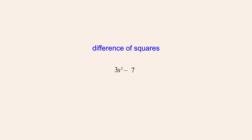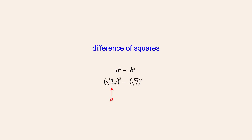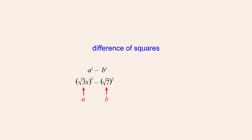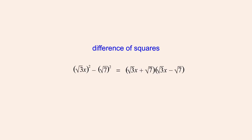Another example is the quadratic expression 3x-squared minus 7, which is the difference of the square of the square root of 3 times x and the square of the square root of 7. So the square root of 3 times x corresponds to the first squared term a, and the square root of 7 corresponds to the second squared term b. Therefore, the factors a-plus-b and a-minus-b are the square root of 3 times x plus the square root of 7, and the square root of 3 times x minus the square root of 7 — giving the factors of 3x-squared minus 7.